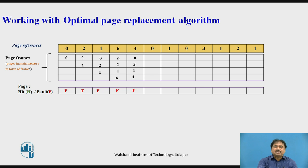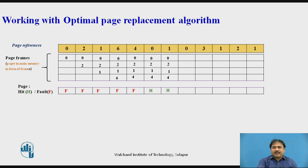Next, we require page number 0, which is available in main memory — so I record a page hit and keep all frames as they are. Then we require page number 1 — again a page hit, frames remain the same. Then page 0 is required again — a page hit, and the secondary memory has nothing to transfer; main memory keeps its distribution as is.